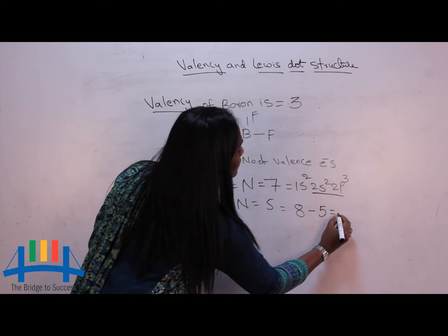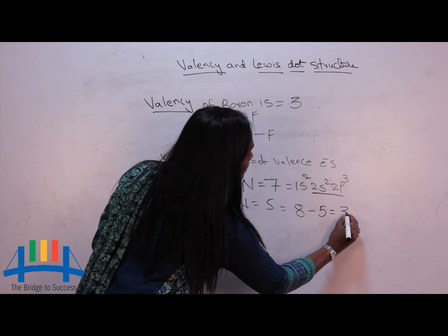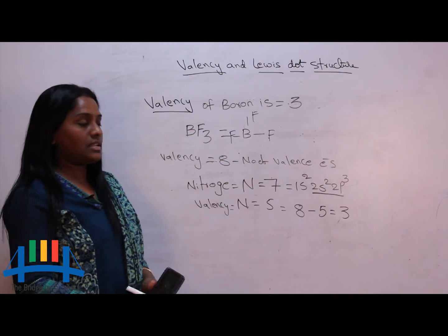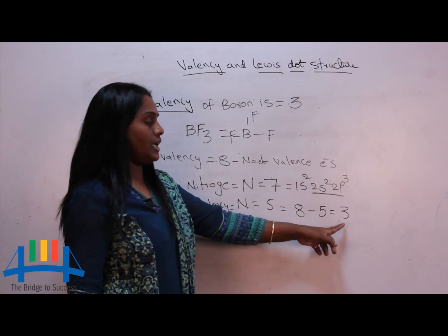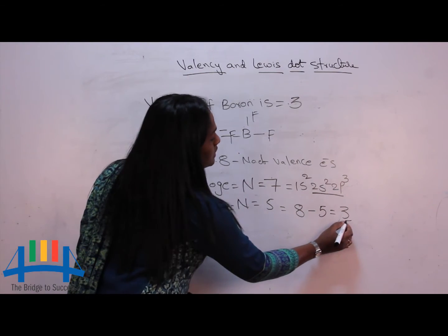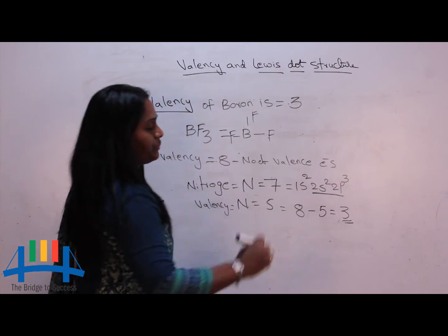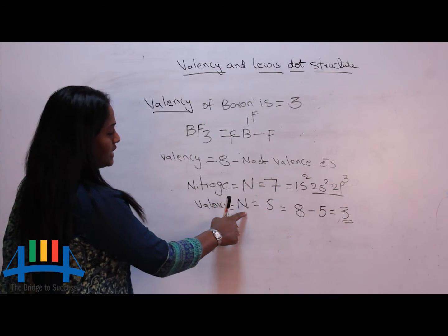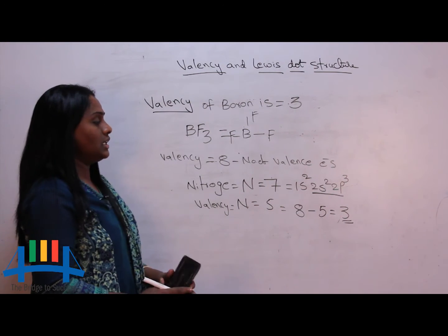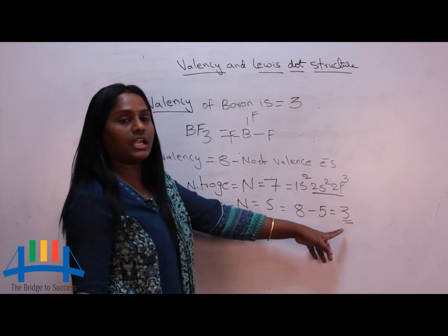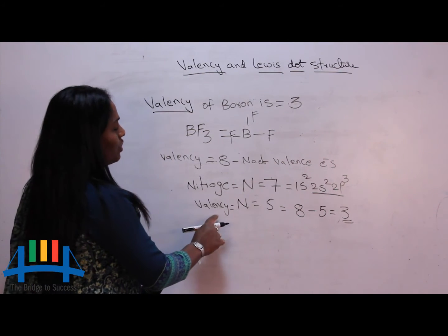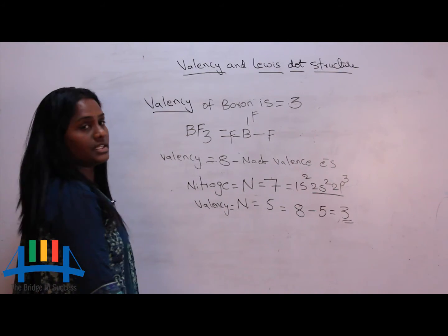Valency of nitrogen equals 8 minus its valence electrons. Valence electrons are 5, so 8 minus 5 equals 3. Valency of nitrogen is equal to 3. That means nitrogen can combine with three other elements to form its molecule.